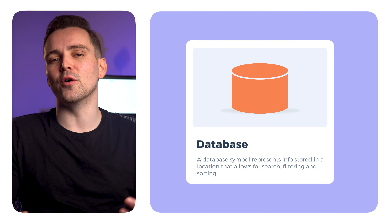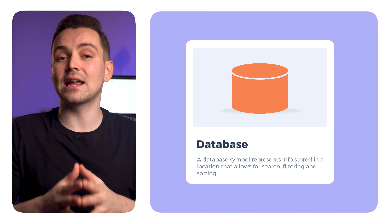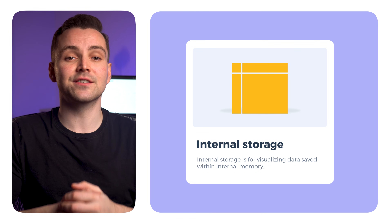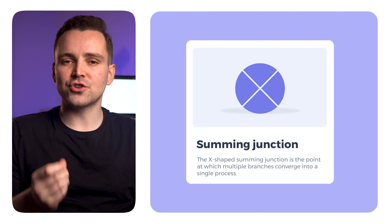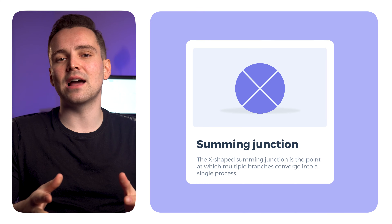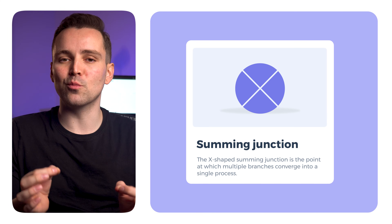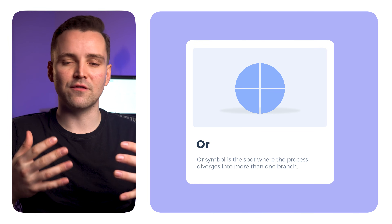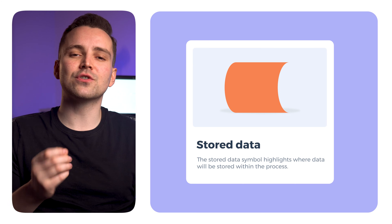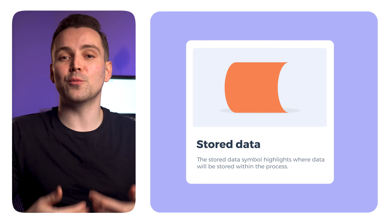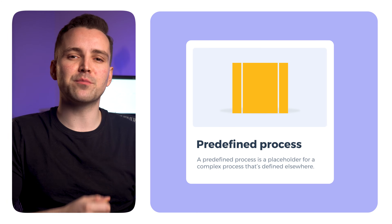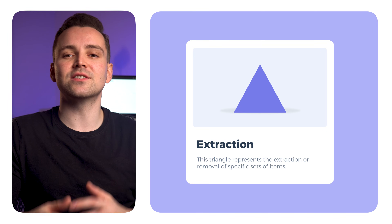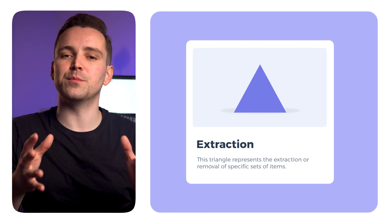A database symbol represents information stored in a location that allows for search, filtering, and sorting. Internal storage is for visualizing data saved within internal memory. The X-shaped summing junction is the point at which multiple branches converge into a single process. While the cross, or OR symbol, is the spot where the process diverges into more than one branch. The stored data symbol highlights where data will be stored within the process. A predefined process is a placeholder for a complex process defined elsewhere. This triangle represents the extraction or removal of specific sets of items.